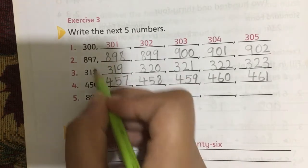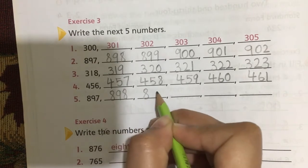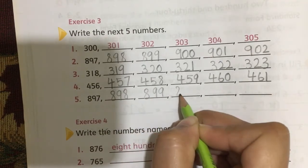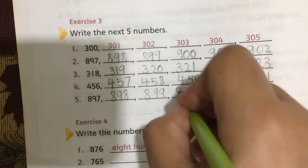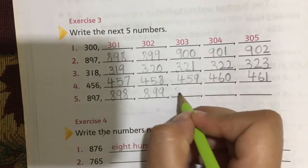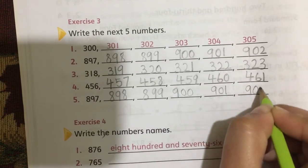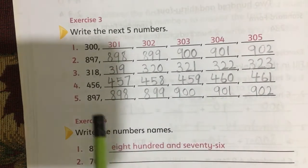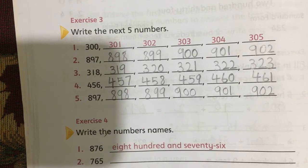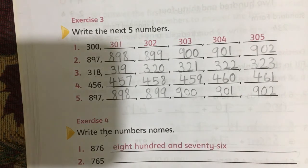898, 899, and then 900—sorry, after 899 it comes 900—then 901 and 902. So this is Exercise Number 3 of Unit Number 2. It is very easy. I hope you understand.